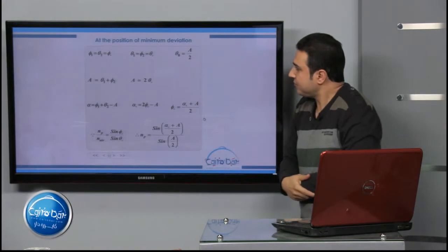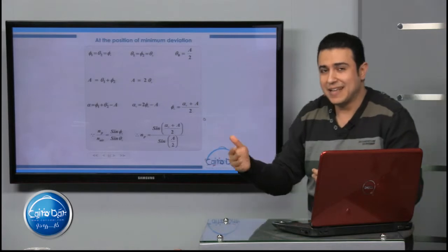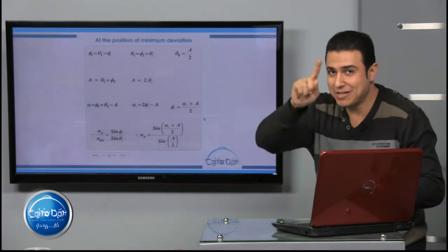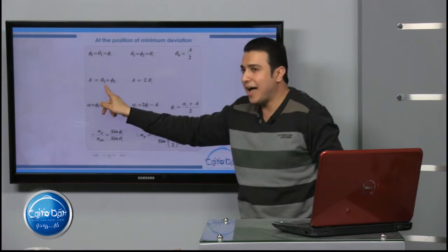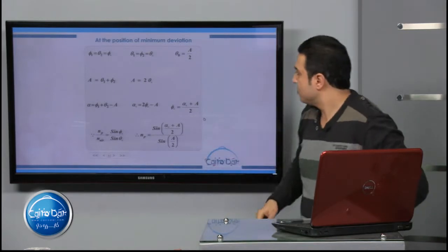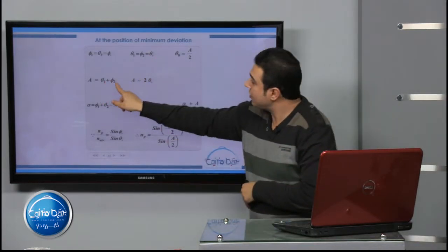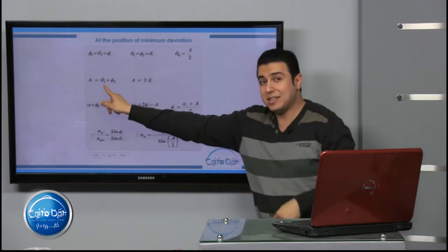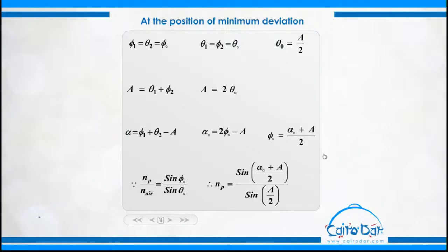As you know from the previous part, A = θ₁ + φ₂. Since θ₁ = θ₀ and φ₂ = θ₀, we get A = θ₀ + θ₀ = 2θ₀. Therefore, θ₀ = A/2.